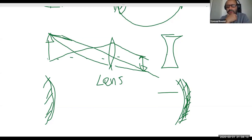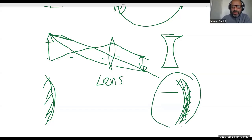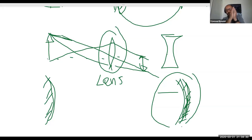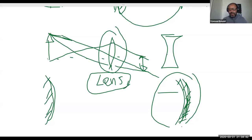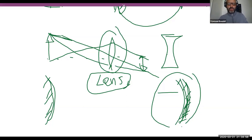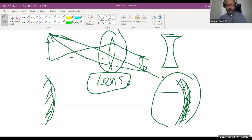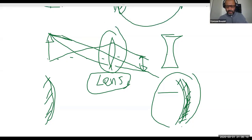Lens-based refractive telescopes require the surface to be perfect on both sides, with both radii of curvature exactly right — more expensive and bulkier. Mirror-based reflective telescopes are easier to make, smaller, and are what 99% of buyers purchase. They're less expensive and easier to maintain. So that's the intro to optics — now you have an understanding of how these devices work, and I'll go back to the PowerPoints.